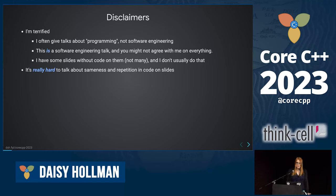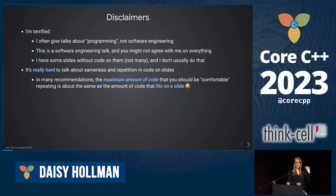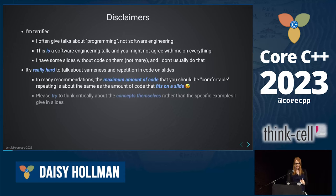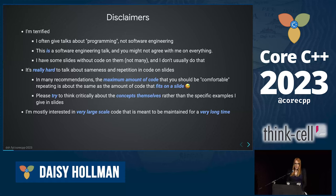It's really hard to talk about sameness and repetition of code in slides. I think often the maximum amount of code that people are comfortable repeating is roughly the amount of code that fits in a slide, which is kind of inconvenient. It's hard to show an example worth extracting into a form of sameness because it doesn't fit on a slide. Try to think critically about the concepts themselves rather than the specific examples. I'm mostly interested in very large scale code that's meant to be maintained for a very long time.